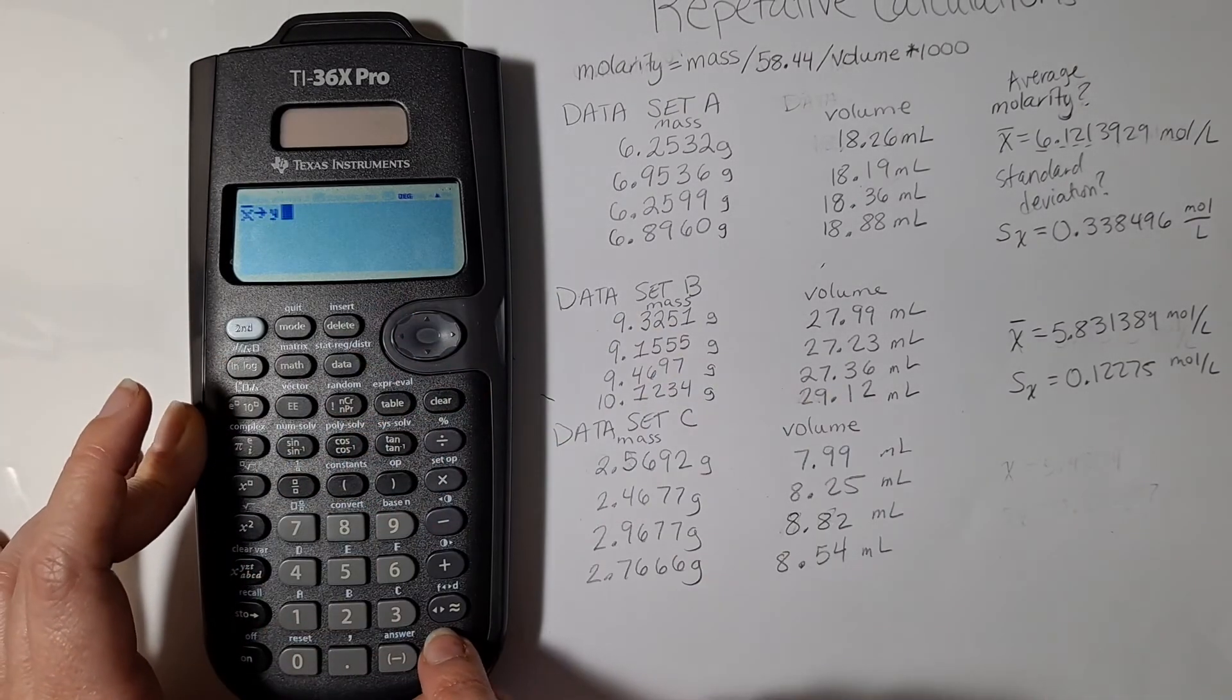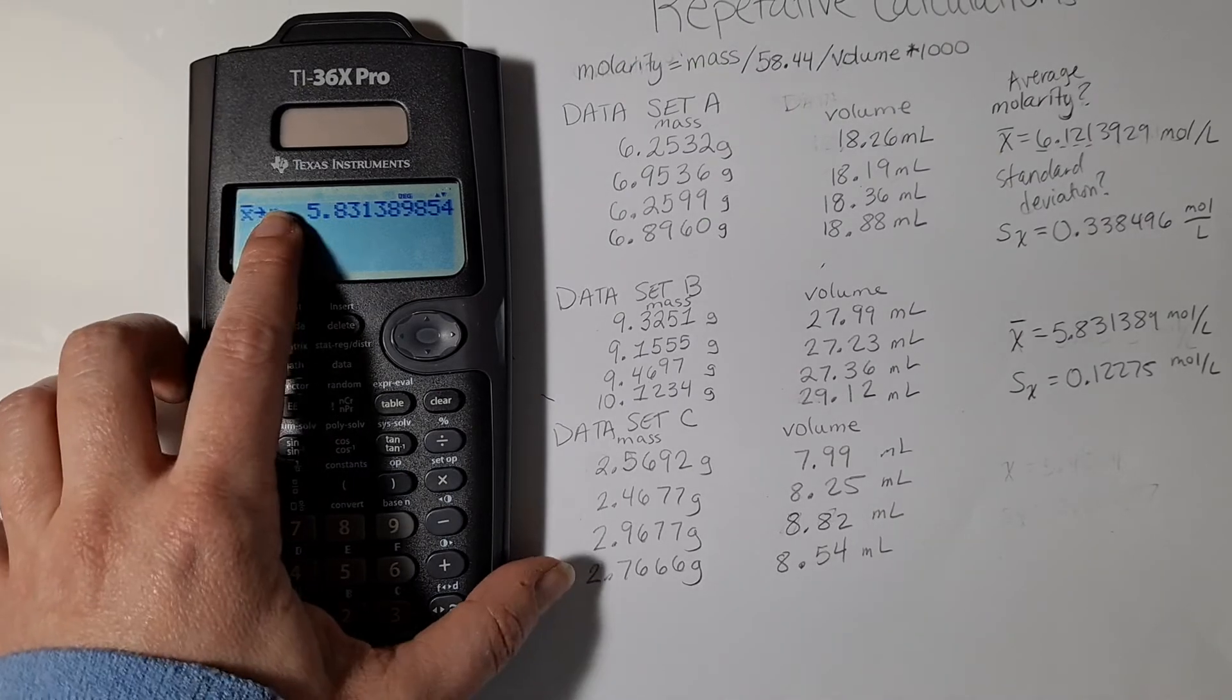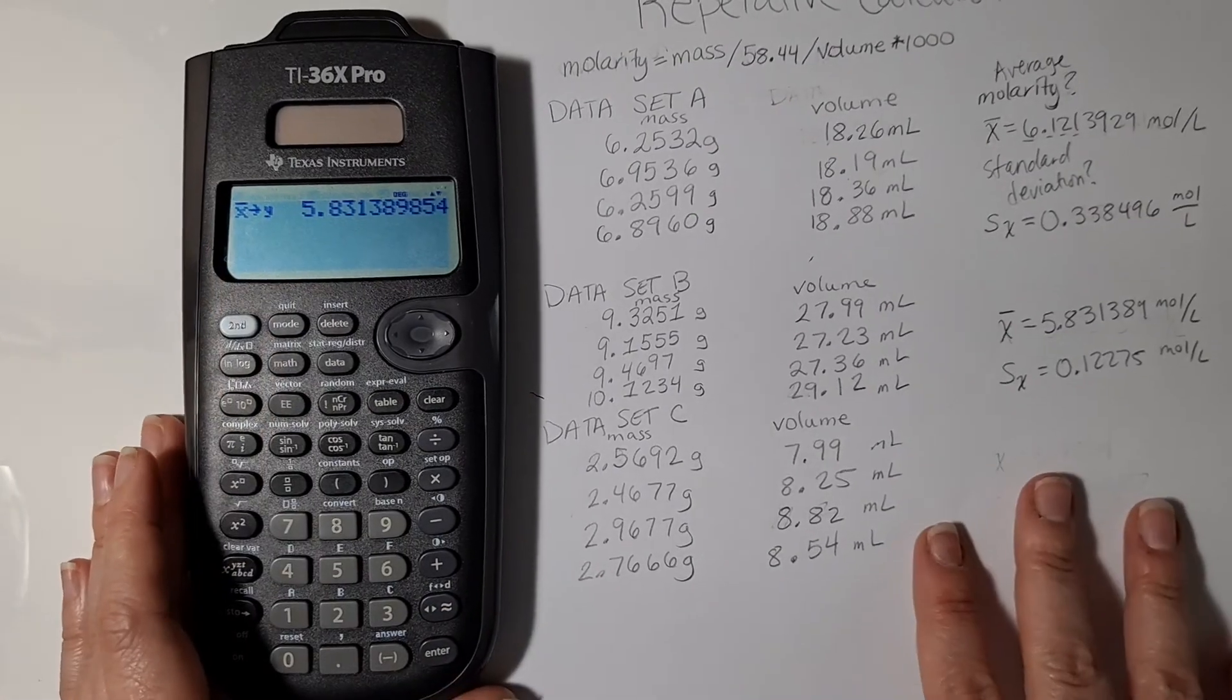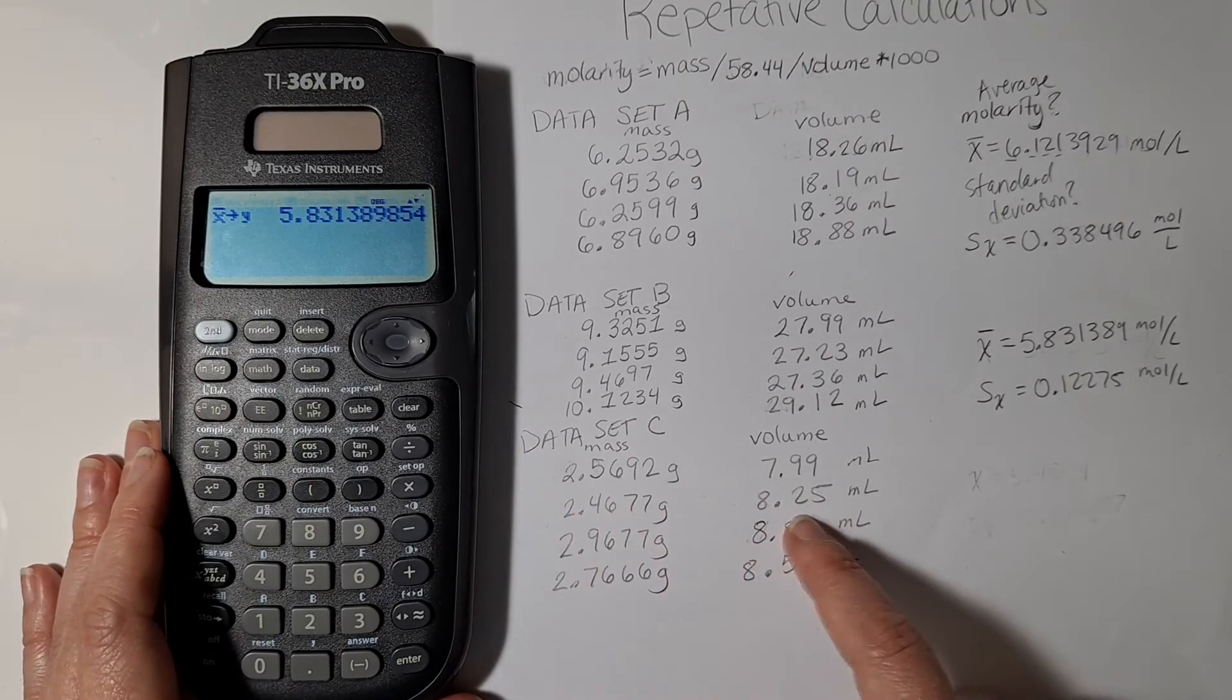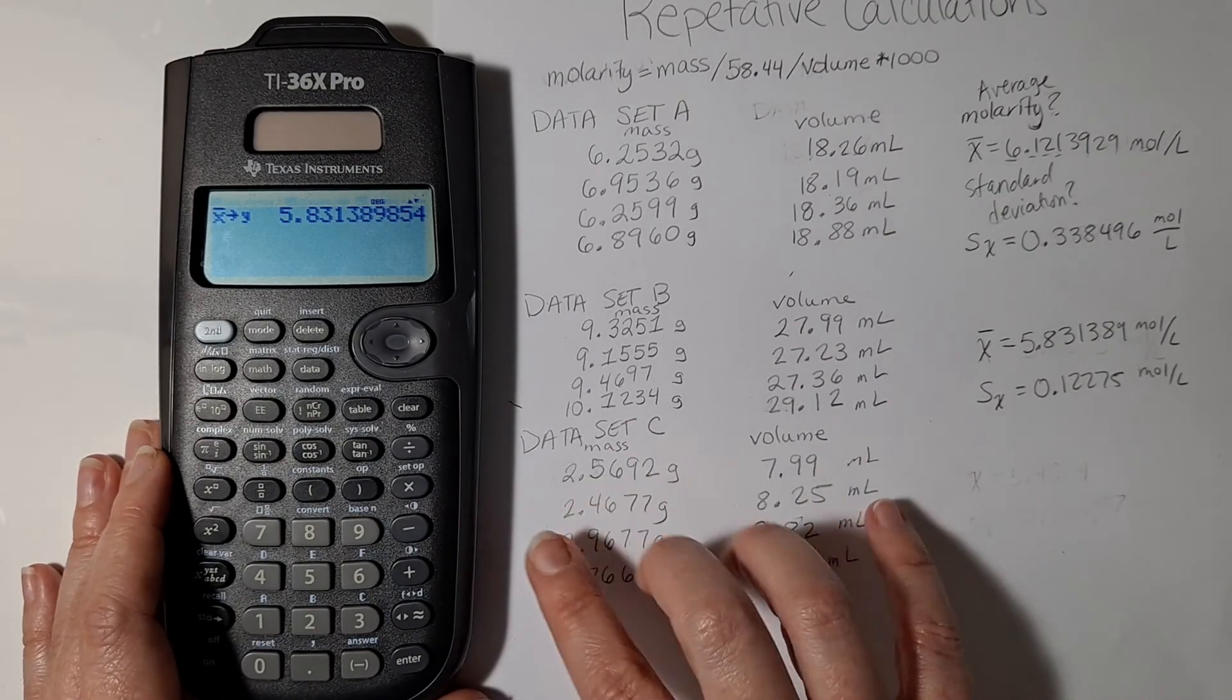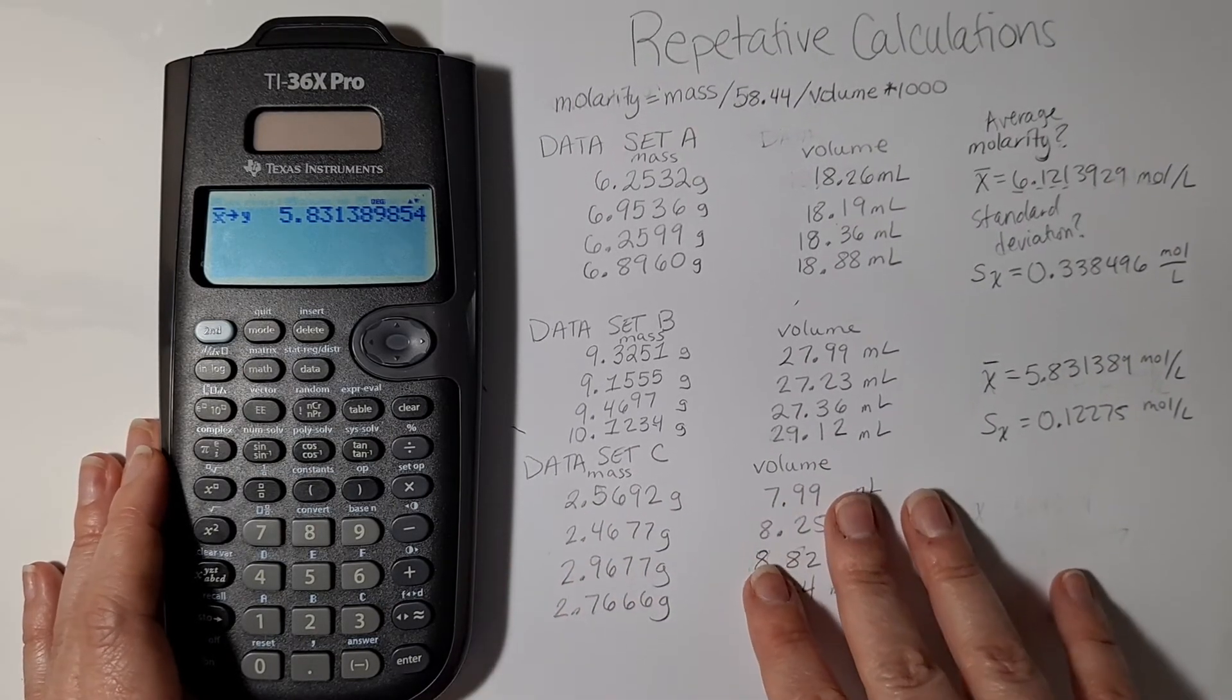I would pick a different letter and then all I would need to do is repeat this process for the third data set, but for the sake of time I'm going to skip that.